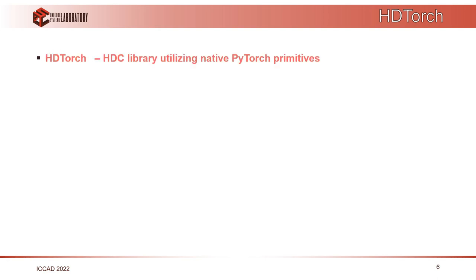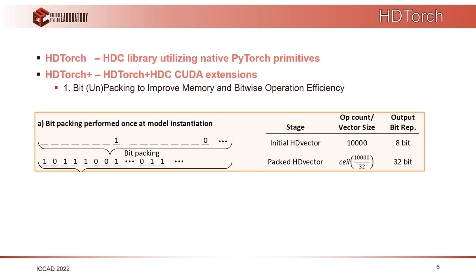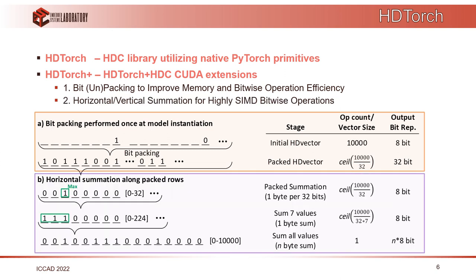HDTorch primarily uses native PyTorch primitives for most of its functionality. However, we also designed HDTorch Plus, which uses custom CUDA functions to accelerate key HDC operations — namely, bit packing and unpacking from one-byte Boolean values to packed bit vectors to improve memory efficiency, and horizontal and vertical summation for summing arrays of packed bit vectors.